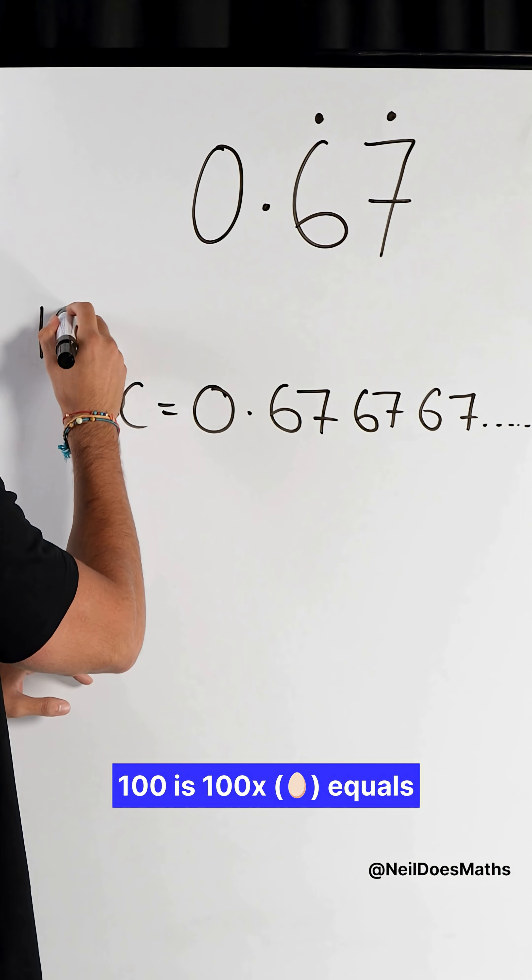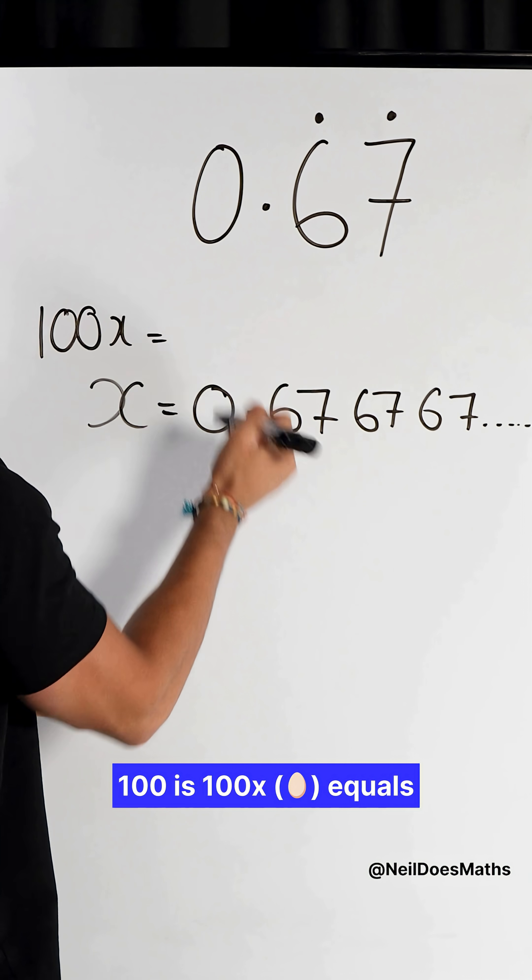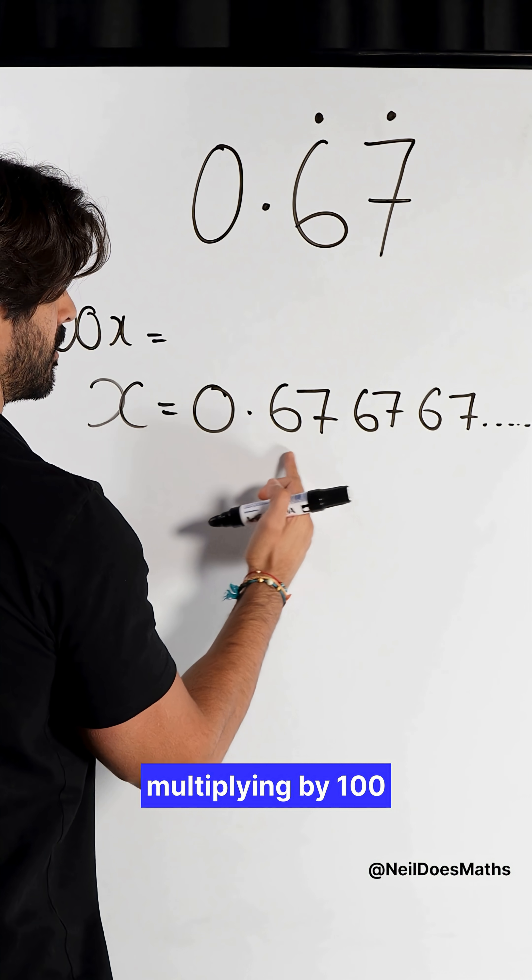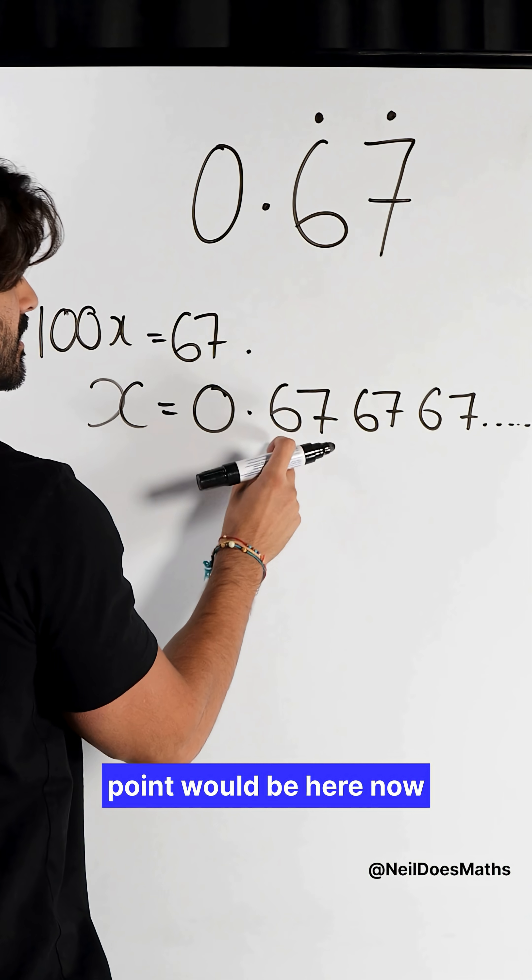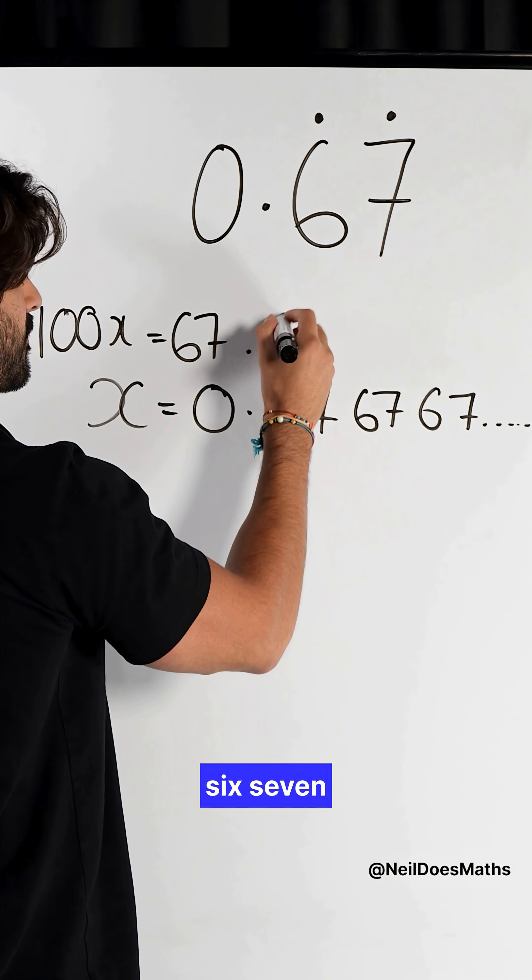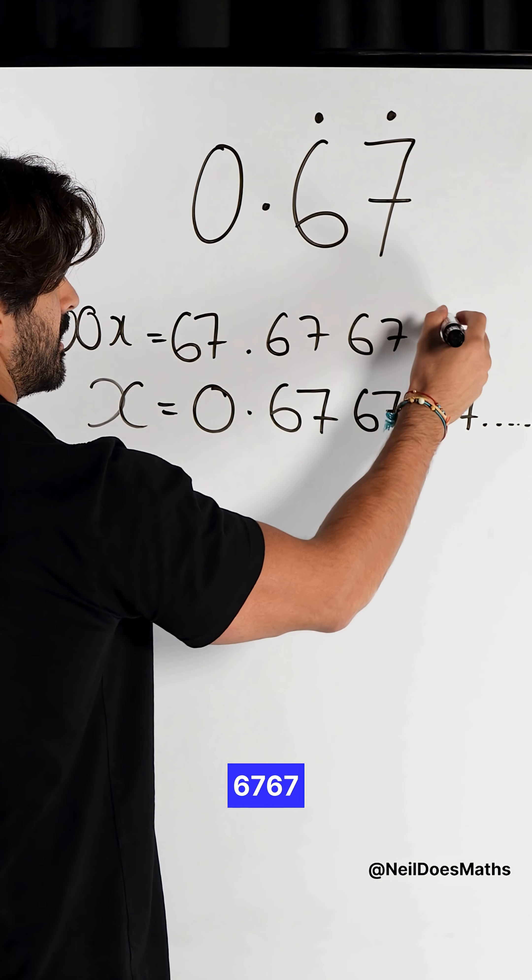X times 100 is 100X equals, multiply by 100, the decimal place moves twice to the right, so it becomes 67 point 6, 7, 6, 7, 6, 7.